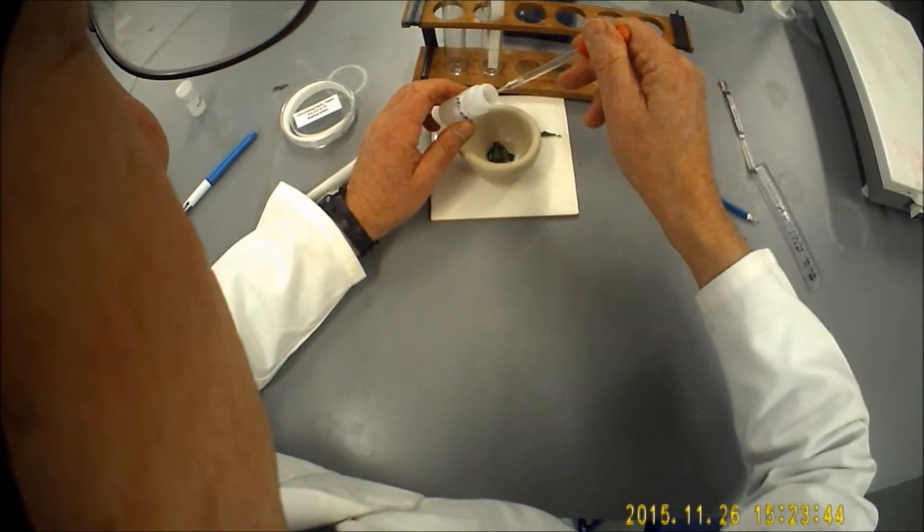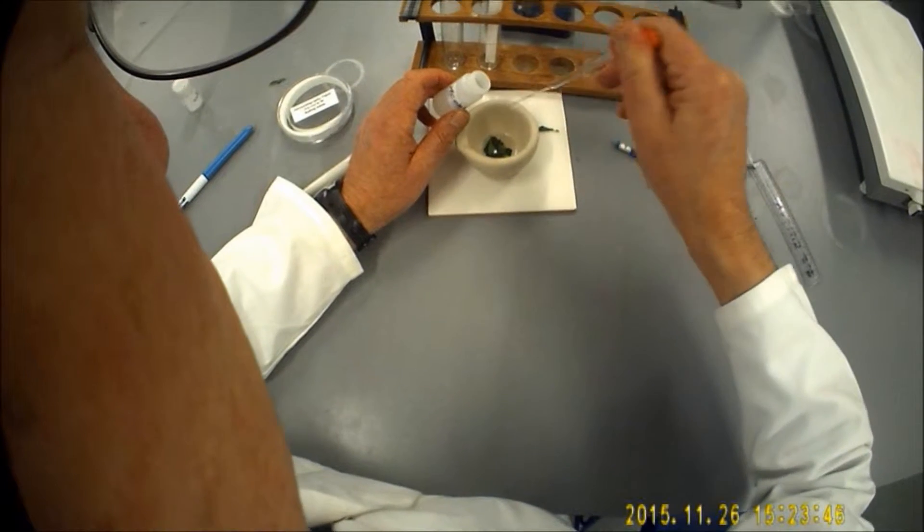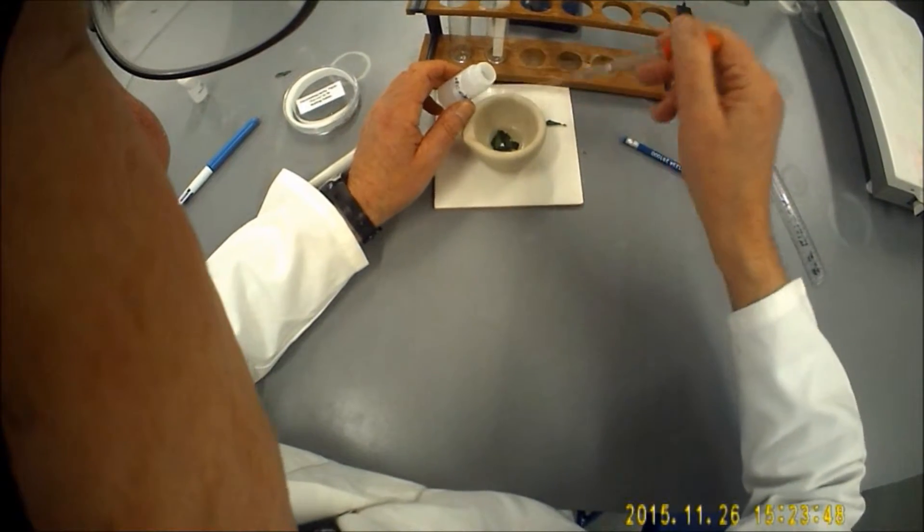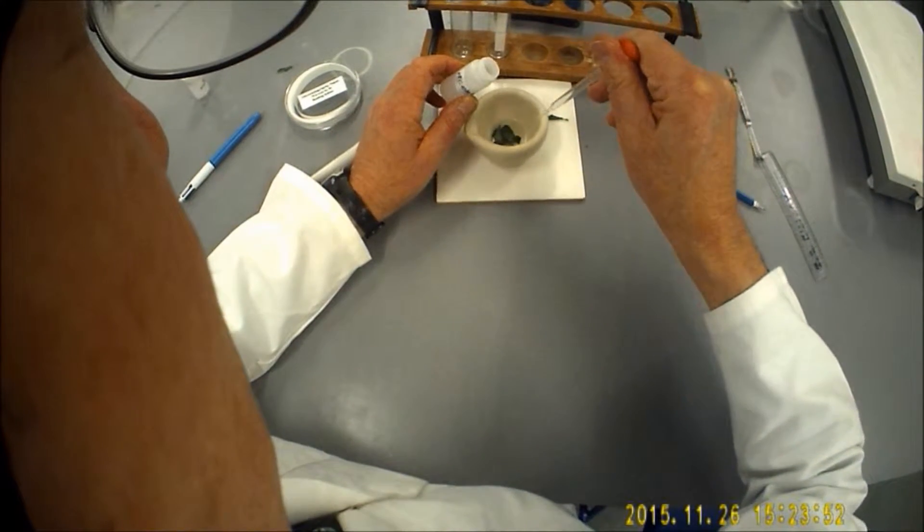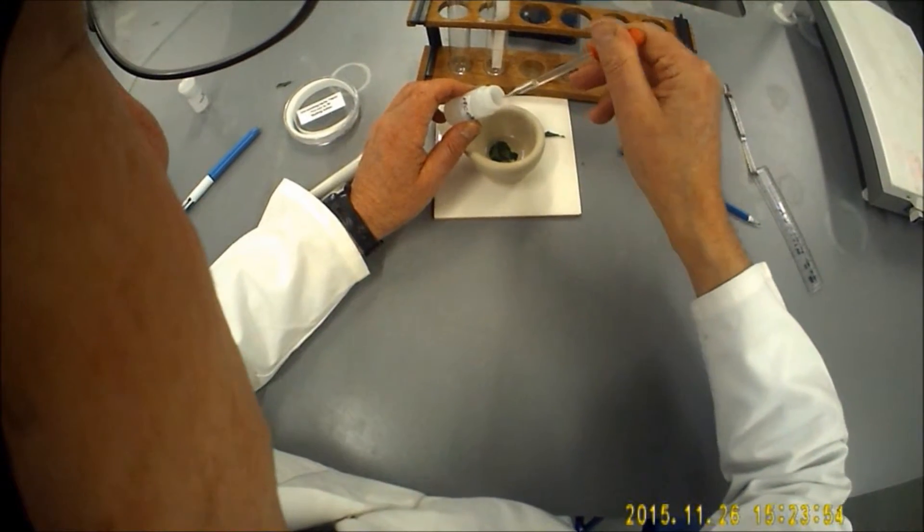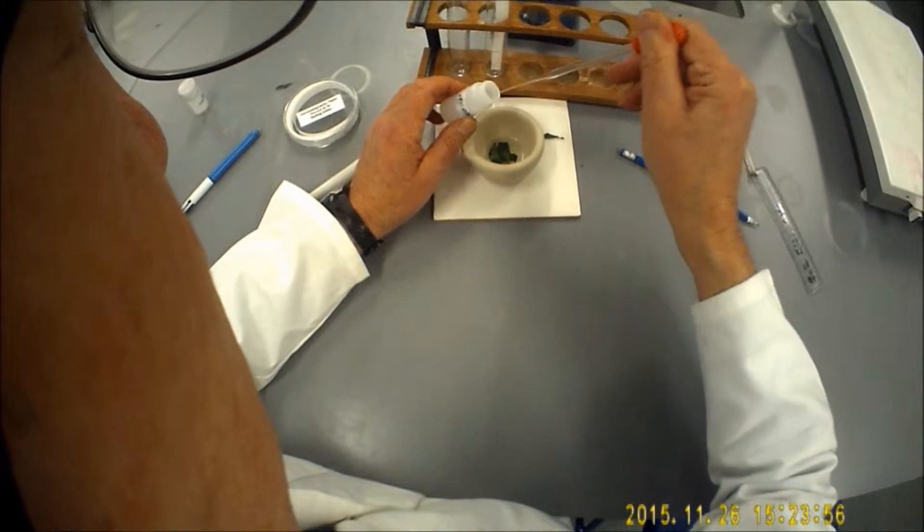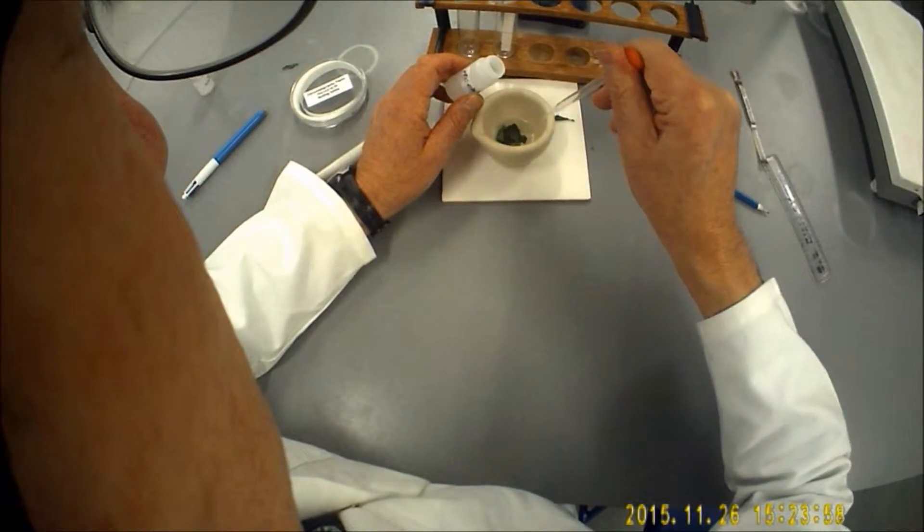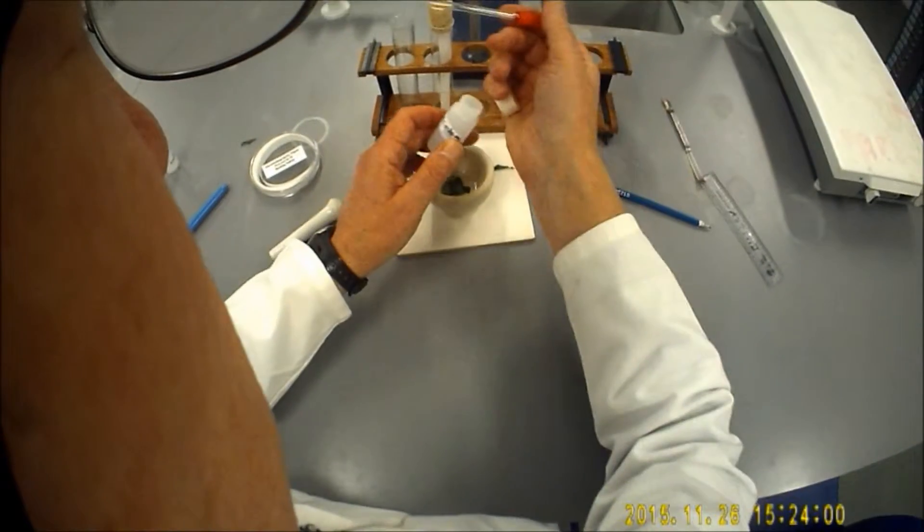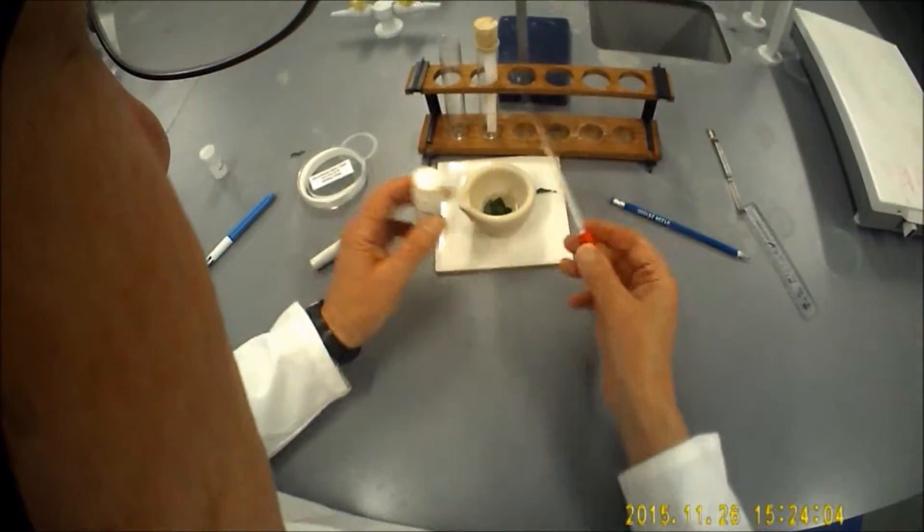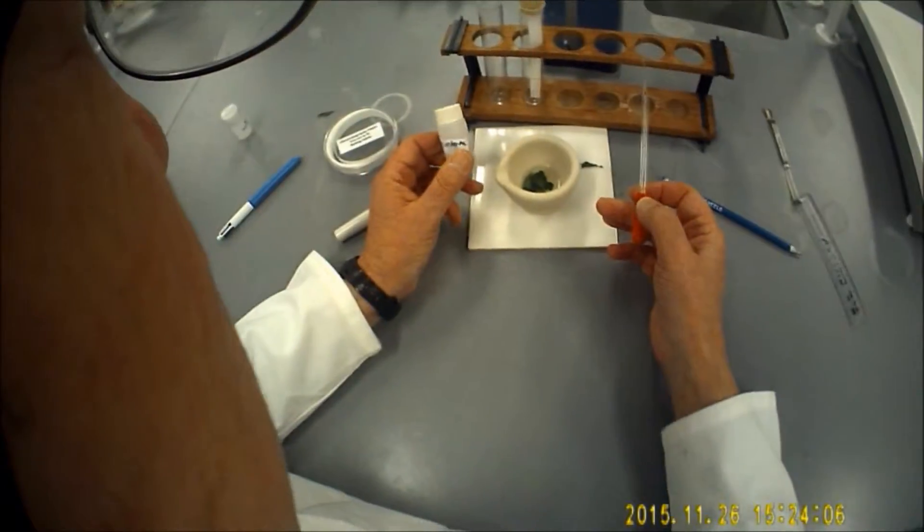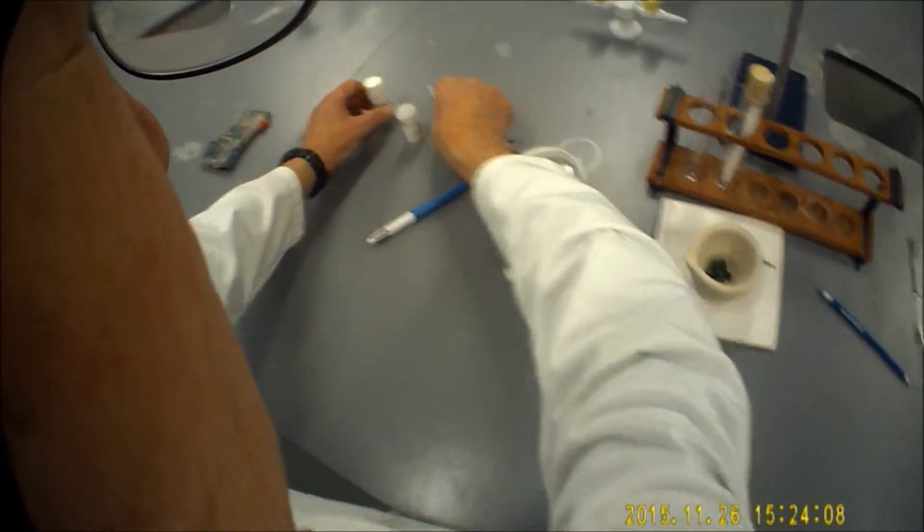You might be able to see already there's a faint greenish tinge emerging from the leaf sample. I'll do a couple more. That should do nicely. I'll just put the lid back on. And we're going to put the pipette and the acetone off to one side.